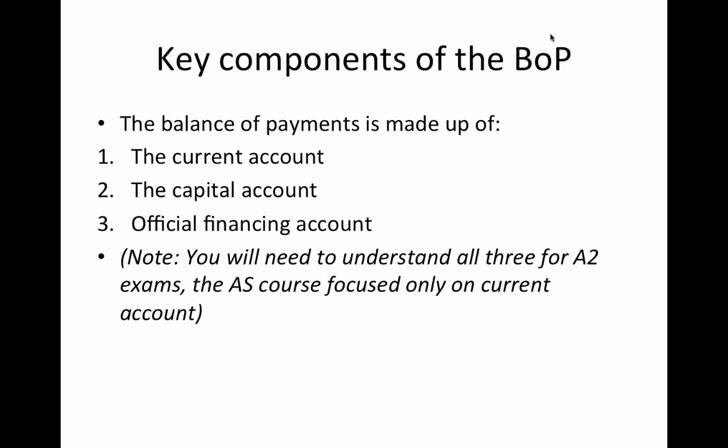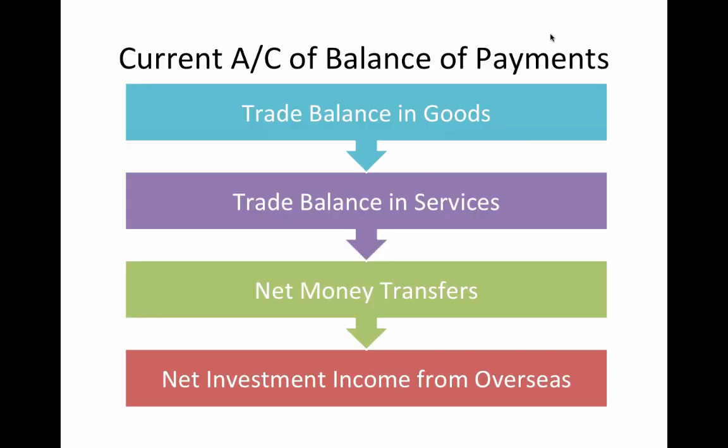The balance of payments is made up of three accounts. The current account is the one you would have covered at AS level. The capital account we'll talk through in a second. And there's also the official financing account — the ways in which governments have to make sure their balance of payments balances. For A2 you need to know all three. If you're taking AS exams, just the current account is all you need to cover in revision.